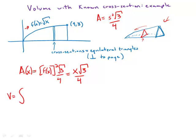Well, now we're ready to integrate. Volume is the integral from 0 to 9. Of course, this point right here is 9, 0 to 9 of A of x, which is x root 3 over 4 dx.